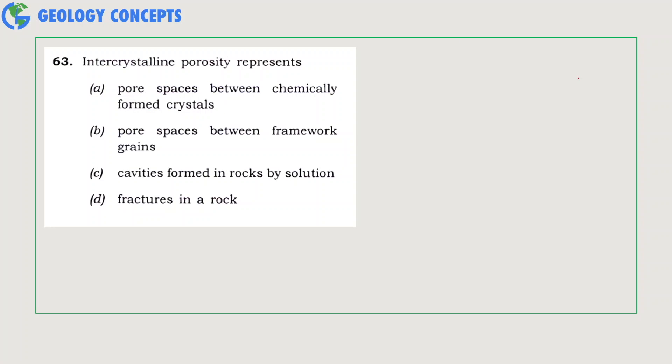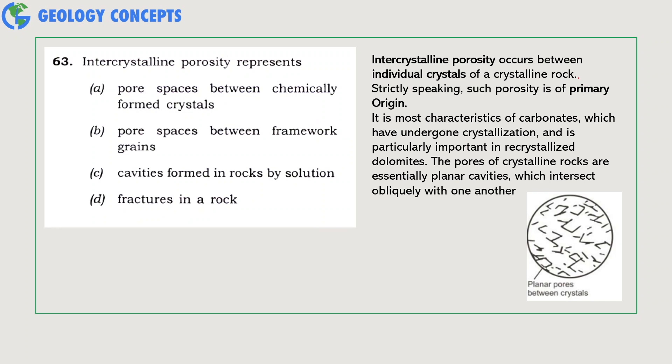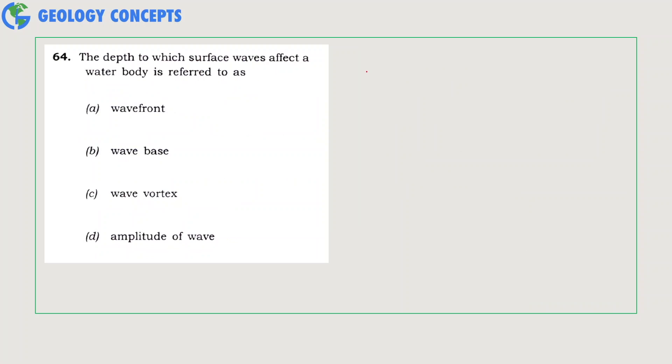Intercrystalline porosity represents which of the following? Intercrystalline porosity occurs between individual crystals of a crystalline rock or between the framework grains. They are of primary origin. It is most characteristic of carbonates which have undergone crystallization and is particularly important in recrystallized dolomites. The pores of crystalline rocks are essentially planar cavities which intersect obliquely with one another. Hence, option B is the right answer.